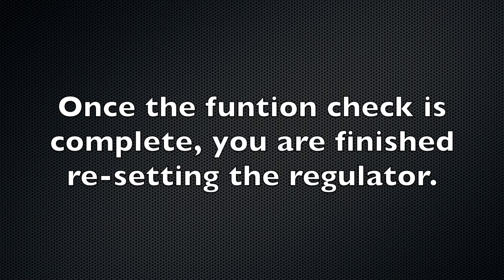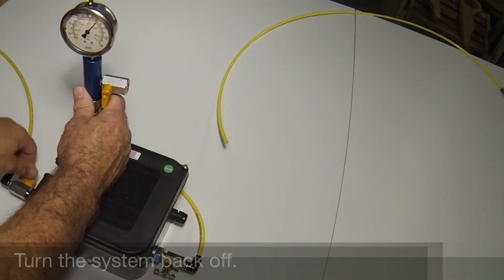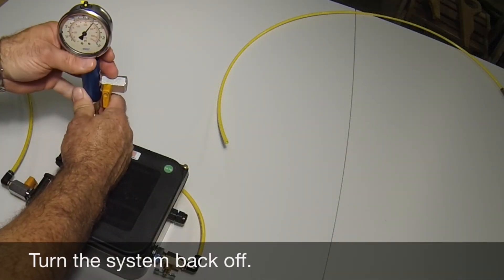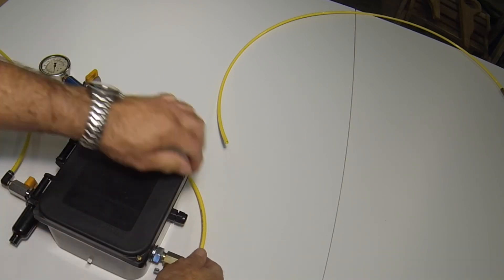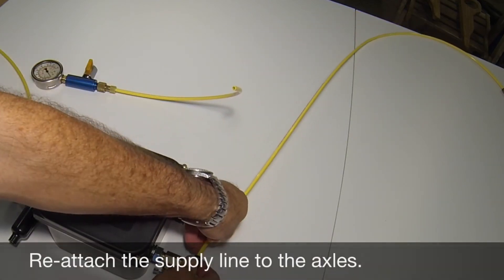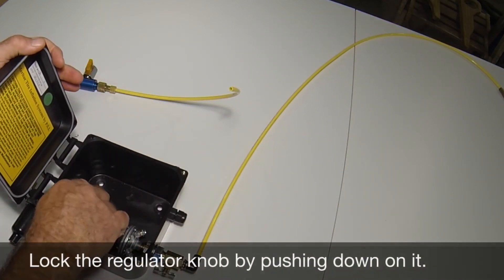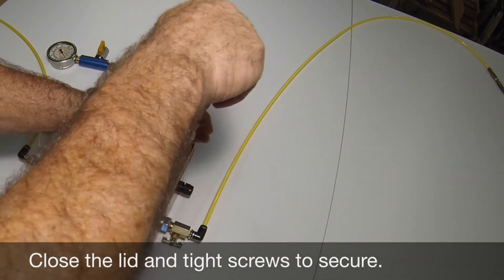Now let's put the system back together and into operation. Turn the system back off. Open the bleed valve on the test gauge. Disconnect the test gauge from the quick connect and reconnect the supply line to the axles. Lock the regulator knob by pushing down on it. Close the lid and tighten the screws.